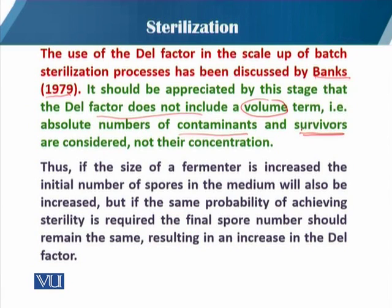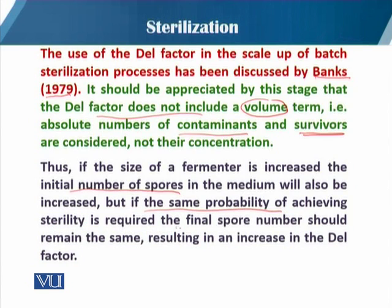We are dealing with the number of contaminants, not their concentration. So if the volume is less, the number is less; if the volume is more, the number is more. If the size of the fermenter is increased, the initial number of spores in the medium will also increase. If the same probability of achieving sterility is required, the final spore number should remain the same, resulting in an increase in the del factor.